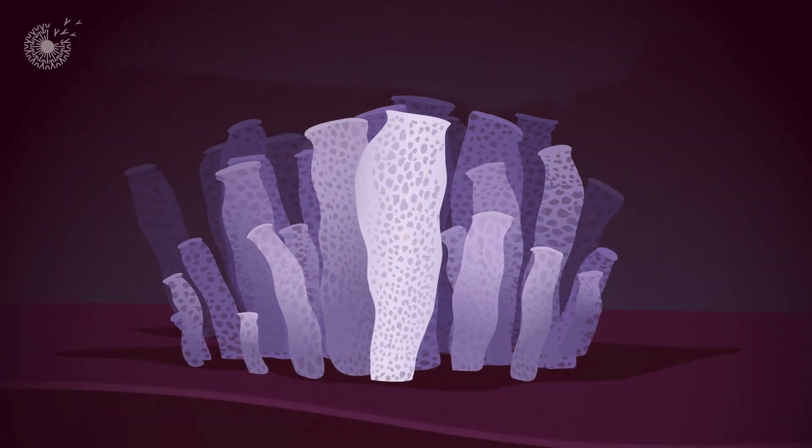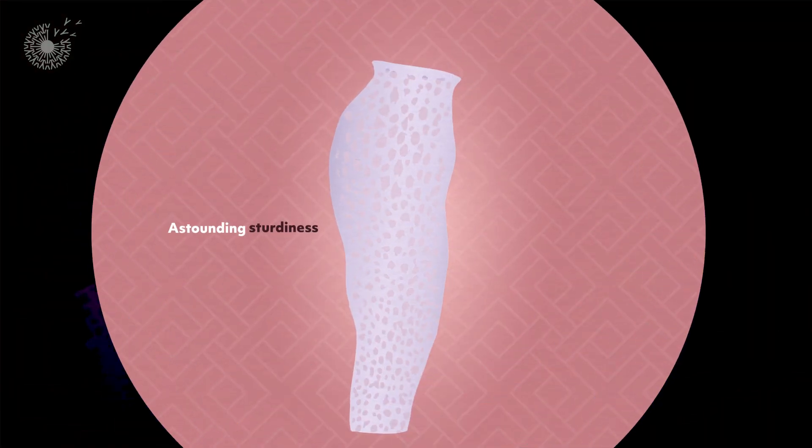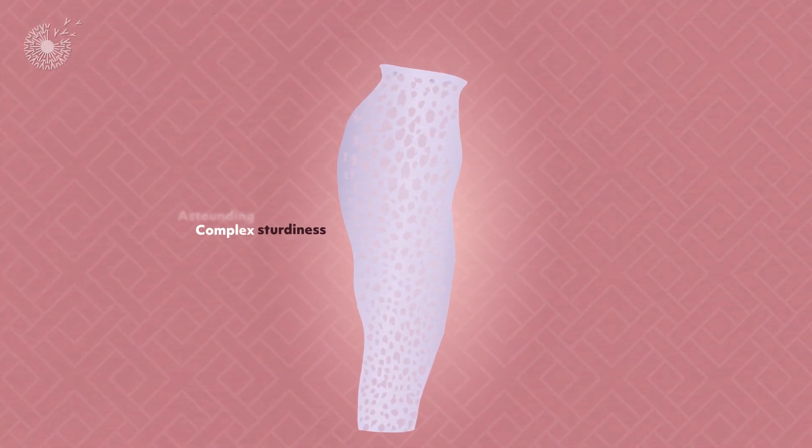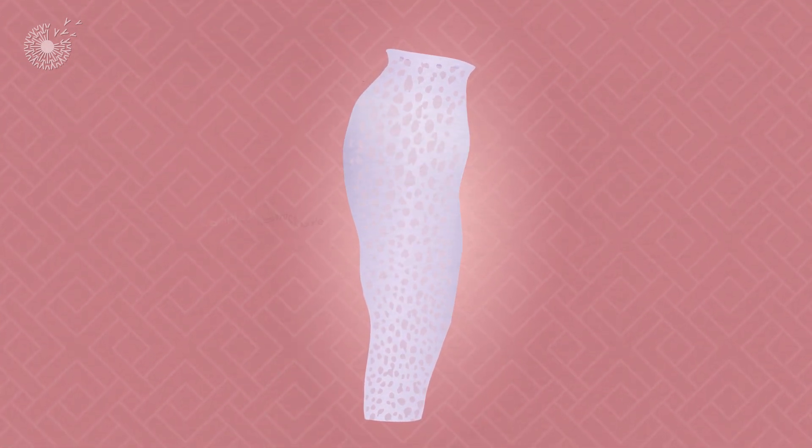The secret to the Venus flower basket's astounding sturdiness lies in the complex structure within their tubular glass skeletons.